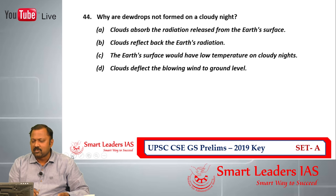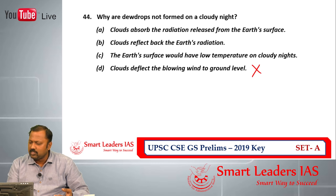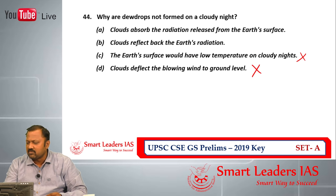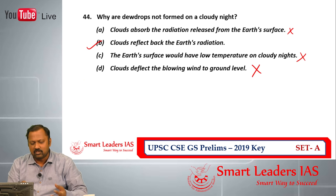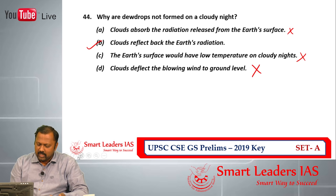Question number 44: why are dew drops not formed on a cloudy night? The option that clouds deflect blowing wind to the ground level is wrong — wind is a horizontal phenomenon, not vertical. The option that the earth's surface has low temperature on a cloudy night is also incorrect — when clouds are present, temperature is higher because clouds prevent the escape of terrestrial radiation. The correct answer is that clouds reflect back the earth's radiation. They reflect it back to the earth's surface, so the cooling needed for dew formation does not occur. Question number 44, answer is B.